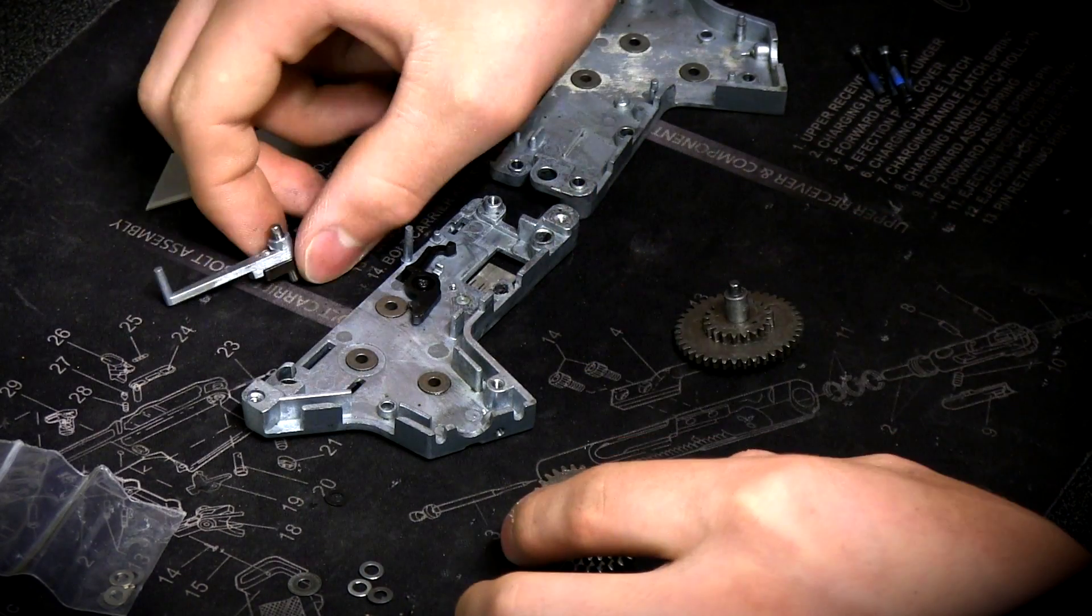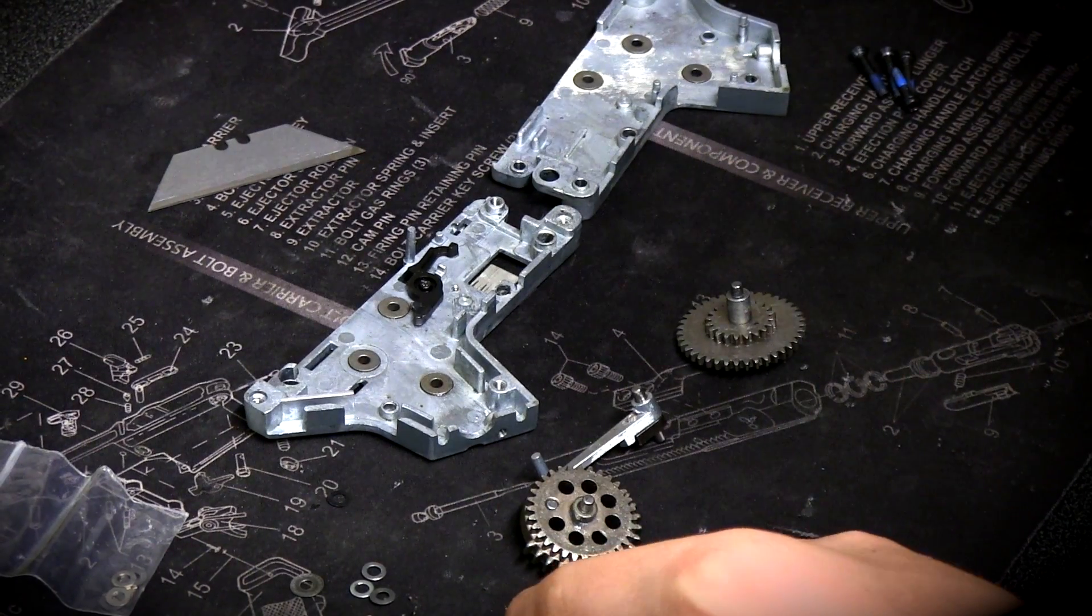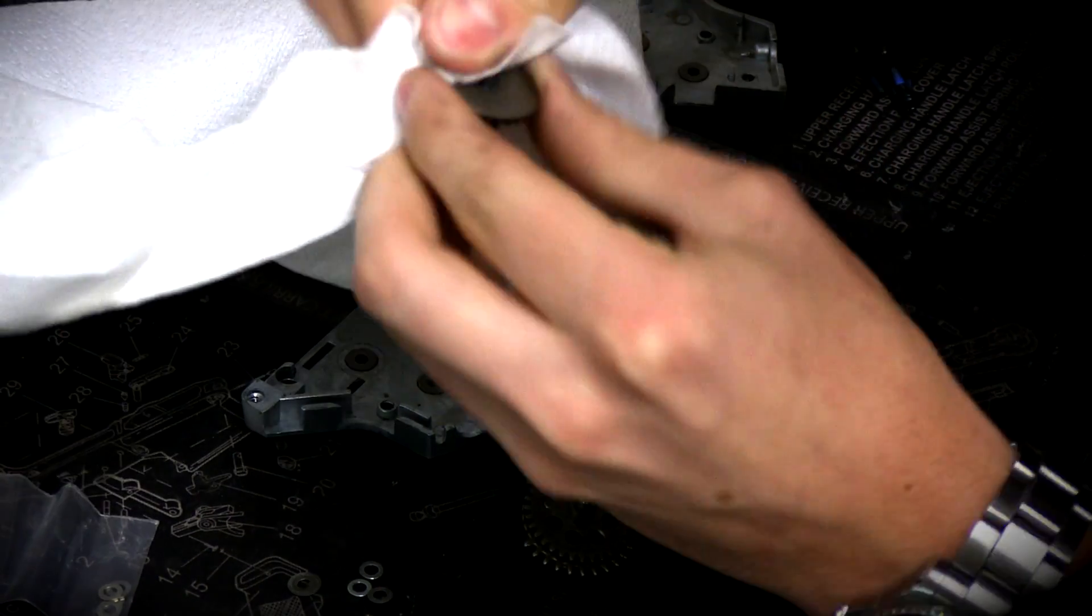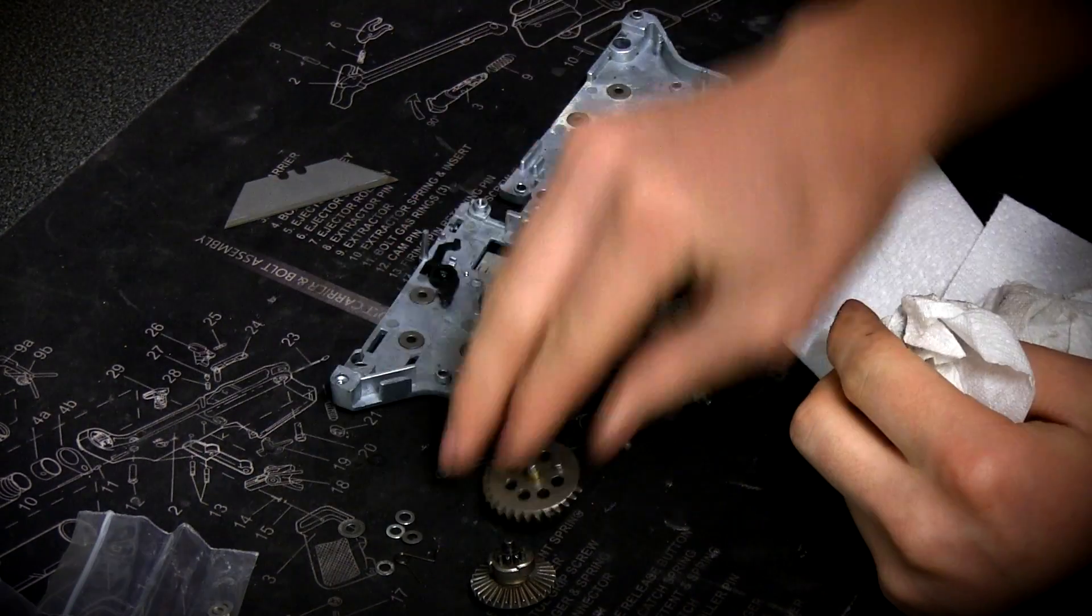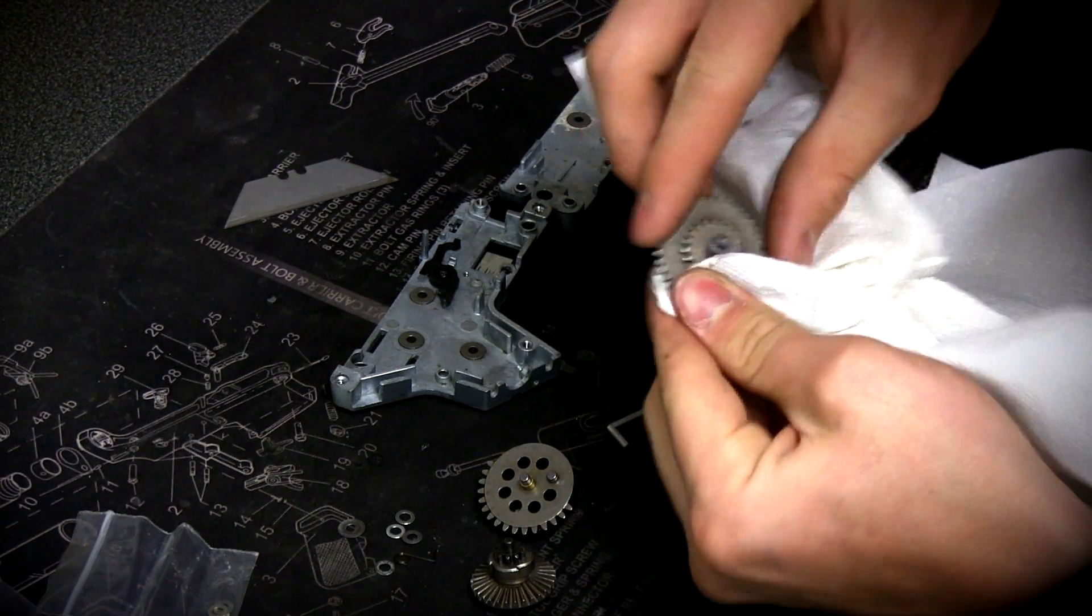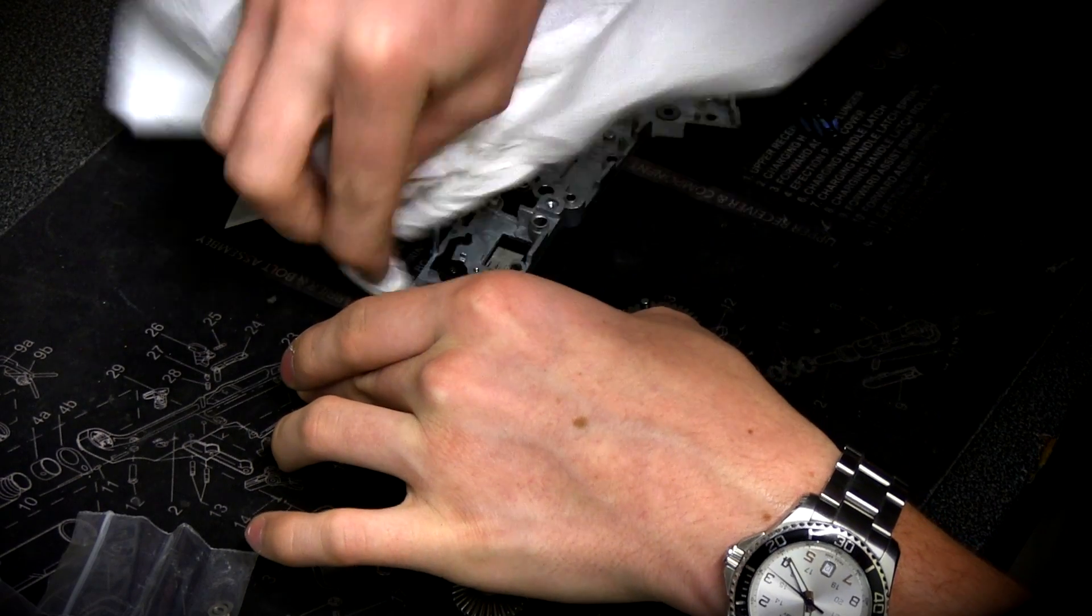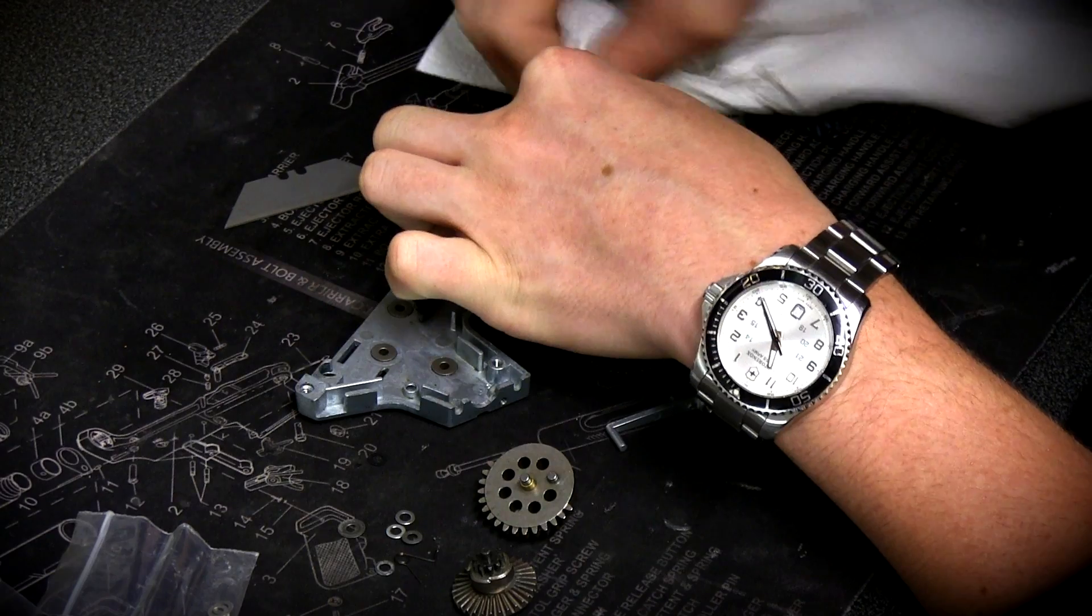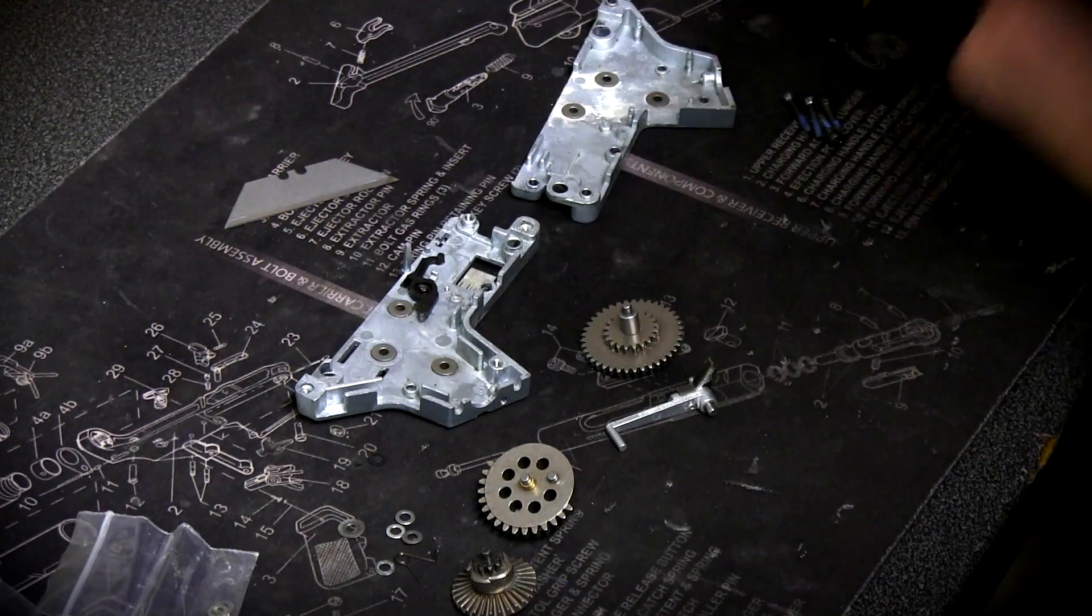All right. Once you have all your shims off, go ahead and get a good bit of the grease off the gears. Make sure you clean out the sector gear teeth, all that good stuff. Clean out that old dirt and grime. Again, cleaning the grease off of your gearbox shell, just like that.